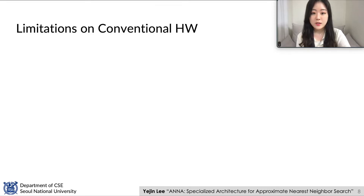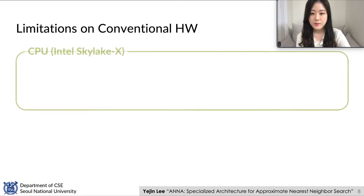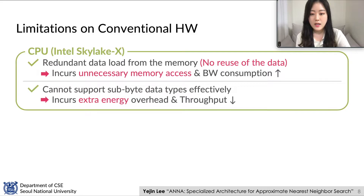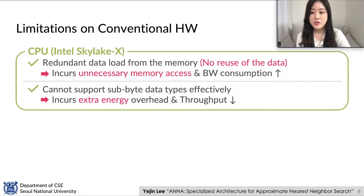We performed an in-depth analysis of the compression-based approach on conventional hardware and found it cannot exploit the best of them. On CPUs, first, the same data is being loaded from memory redundantly across different queries, incurring unnecessary extra memory accesses and consuming a large amount of system memory bandwidth. Second, compression-based algorithms often use sub-byte data types for compressed data. Since CPUs do not support arbitrary sub-byte data types, they continuously use shift instructions to process them, incurring extra energy overhead and degradation in throughput.